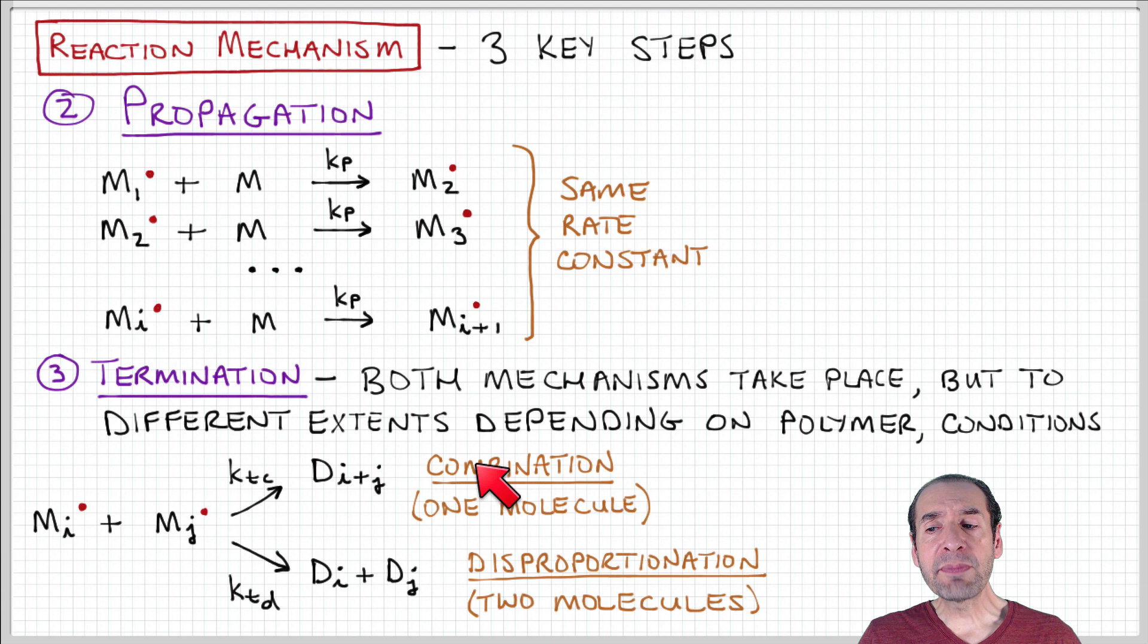Both of these mechanisms can take place, but the relative influence of each of these processes depends on the conditions, the stoichiometry, the chemistry. And as you might imagine, that's an important thing that one would want to control if one wants to tailor the properties of the polymer that's being produced.